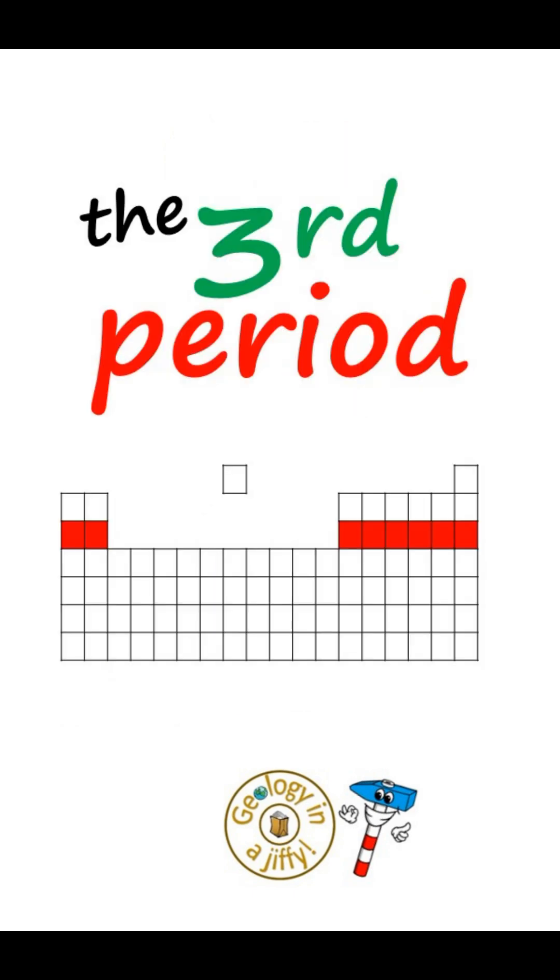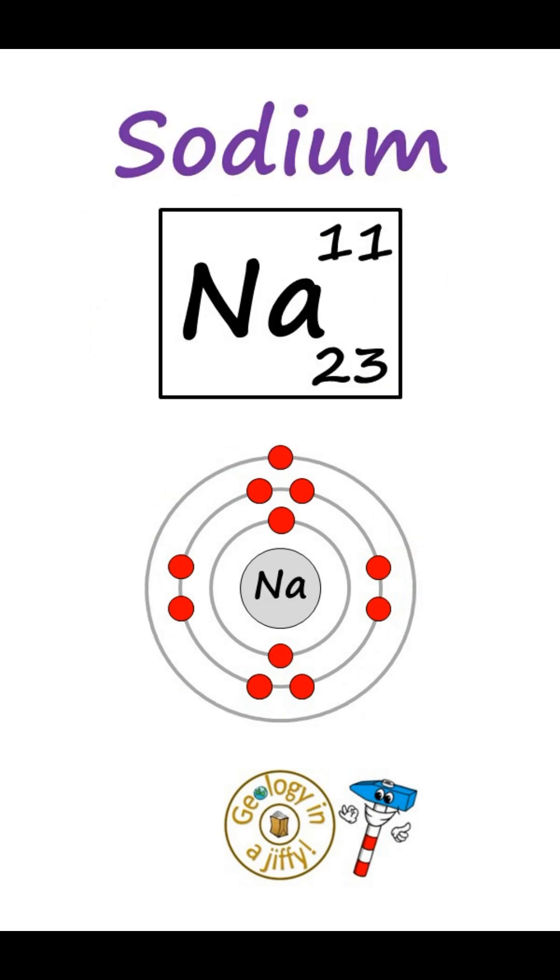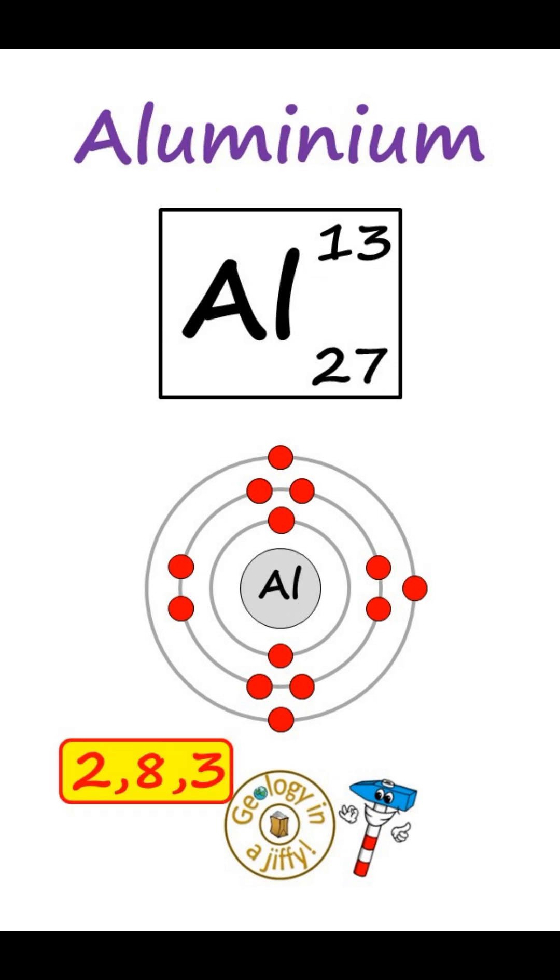The third period has the previous structure with an extra shell made up of sodium 2-8-1, magnesium 2-8-2, aluminium 2-8-3,